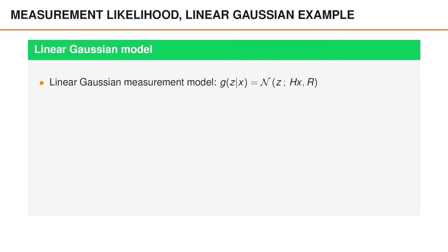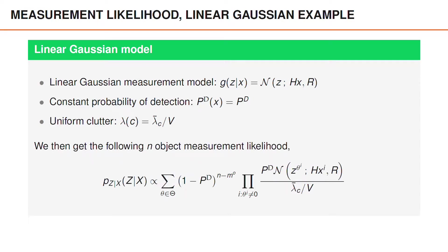Let's consider an example with a linear and Gaussian model, a constant probability of detection, and uniform clutter. For this model, we get the following n-object measurement likelihood. For the objects that were misdetected, because the probability of detection is independent of the object state, we get the probability of misdetection to the power of the number of misdetected objects according to the data association. The total number of objects is n, and with MO object detections, we get n minus MO misdetections. For the detected objects, we get the probability of detection times the Gaussian likelihood divided by the clutter intensity.